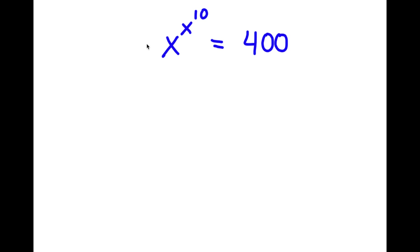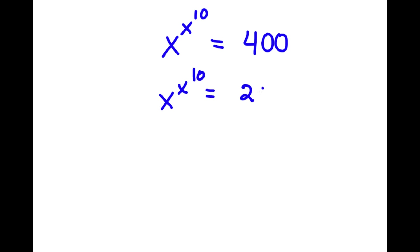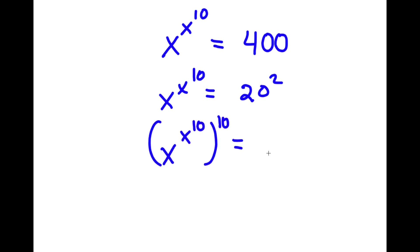In this problem, I have x to the power of x to the power of 10 is equal to 400. To start, I'm going to rewrite 400 as 20 squared. Now I'm going to take the power of 10 on both sides, so I have x to the power of x to the power of 10, to the power of 10, is equal to 20 to the power of 2 to the power of 10.